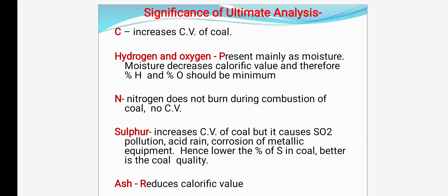Ash is a non-combustible matter and it decreases the calorific value. So it will be better if non-combustible matter is not there in the coal. Out of all components, only carbon is important because carbon percentage increases the calorific value, while all the rest decrease the calorific value. This is the ultimate analysis. Hope you understand. Thank you for watching.